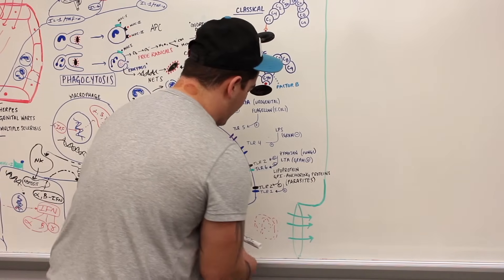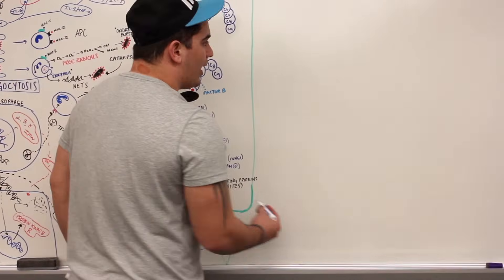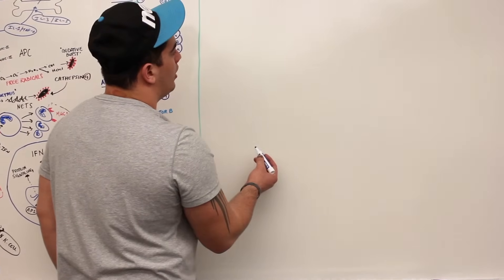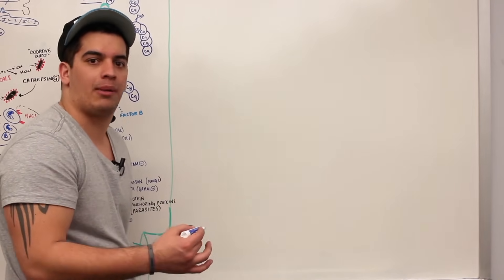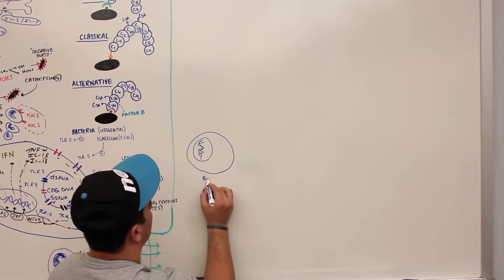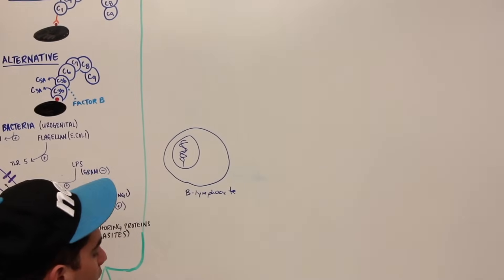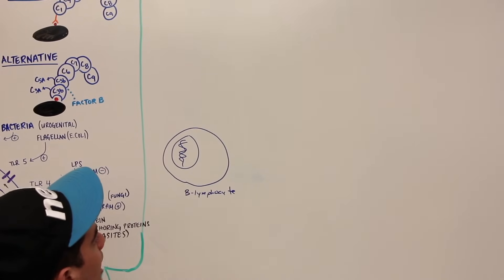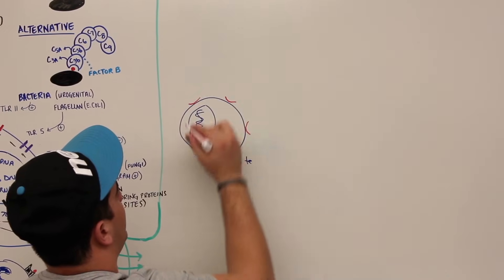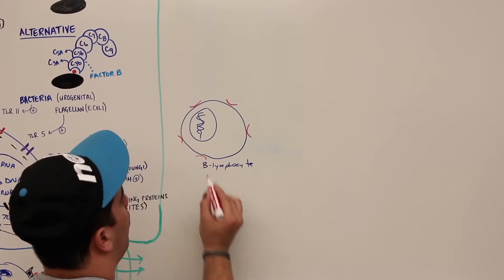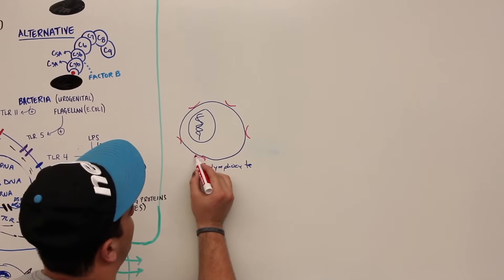So these guys are going to come in here and flow into the lymph node. Looking inside the lymph node, it has these things called germinal centers, and germinal centers are where there's a large amount of B cells. This cell right here is called a B lymphocyte. The B lymphocyte has specific types of receptors present on its cell membrane.